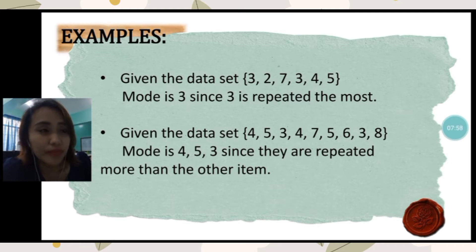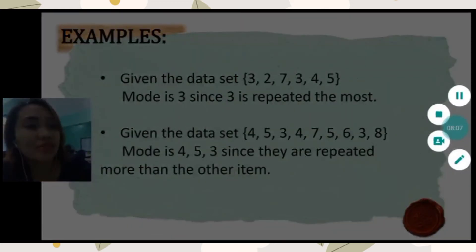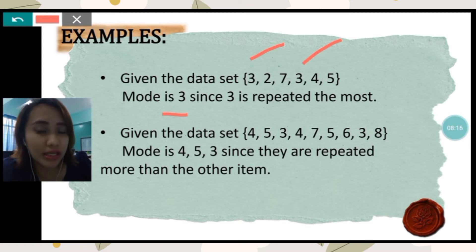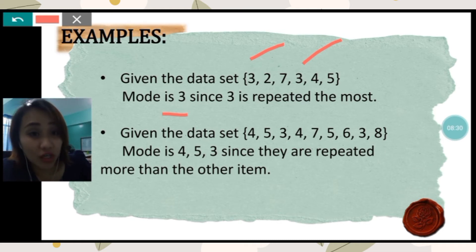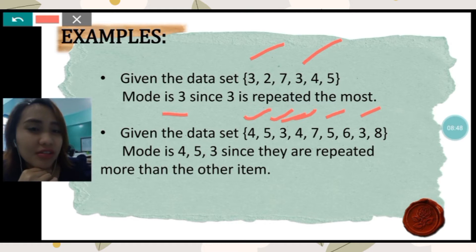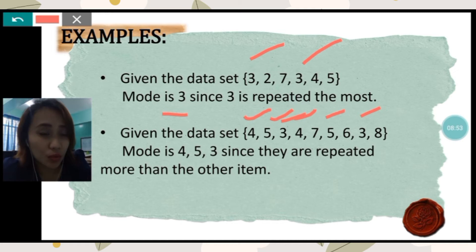For the first example, given the data set 3, 2, 7, 3, 4, 5 — the mode is 3, since 3 is repeated the most in the data set. For the next example, given the data set 4, 5, 3, 4, 7, 5, 6, 3, 8 — the modes are 4, 5, and 3, since they are each repeated more than the other items. We have two 4s, two 5s, and two 3s. Since there are three modes, we call that trimodal.